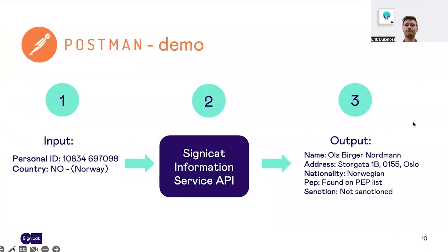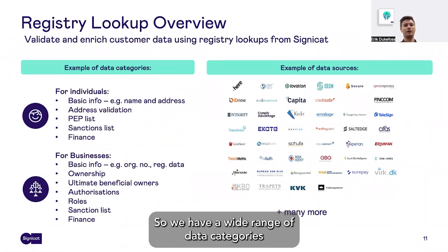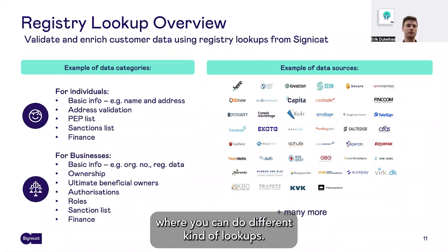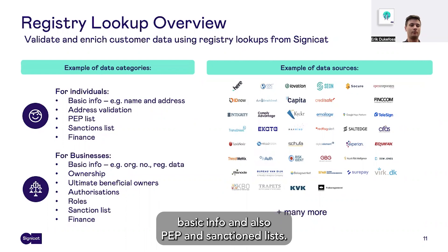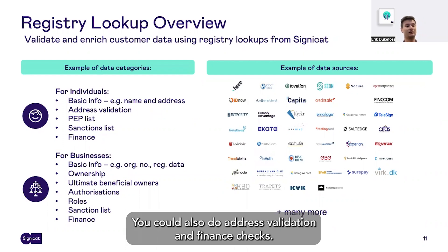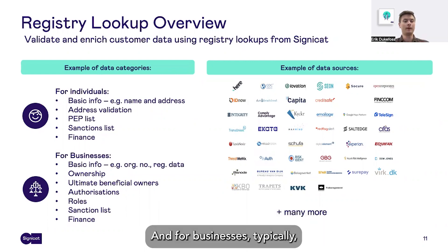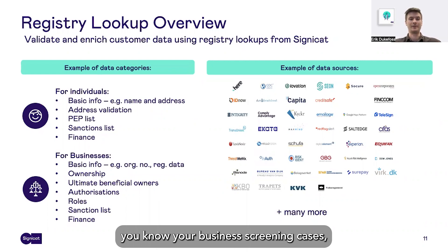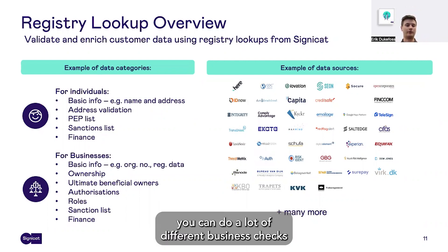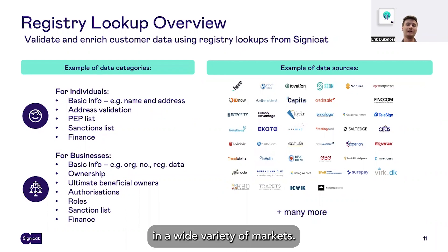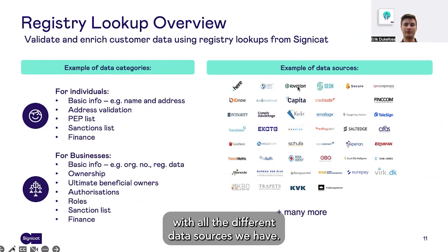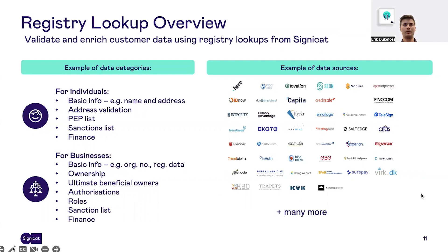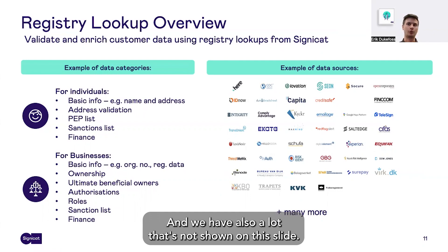Going back to the slides — we have a wide range of data categories where you can do different kinds of lookups. What we did now was for individuals only: basic info and also PEP and sanction list. You could also do address validation and finance checks. And for businesses, typically know your business screening cases, you can do a lot of different business checks in a wide variety of markets, as you see from the example with all the different data sources we have, and we have also a lot that's not shown on this slide.